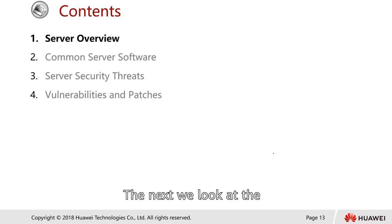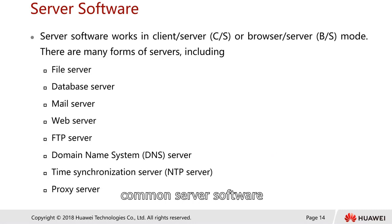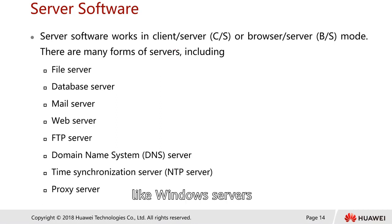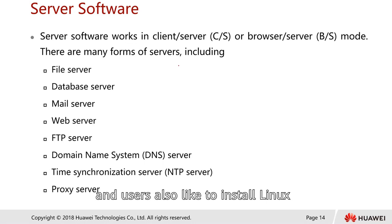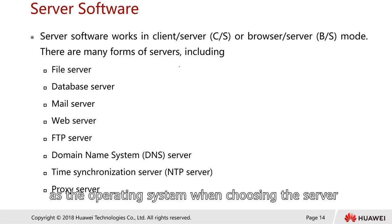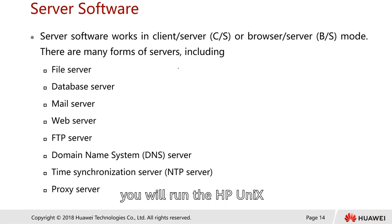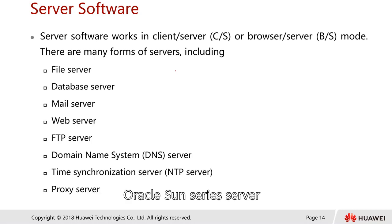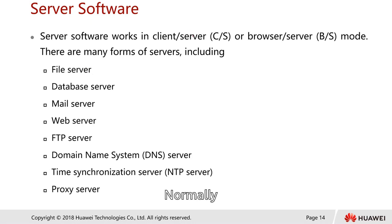Now we look at common server software. Beyond the operating system, customers typically install Windows Server editions such as 2012 or 2016, or Linux. For HP servers, HP-UX is used; for IBM servers, IBM AIX; and for Oracle Sun-series servers, the Solaris operating system is used.